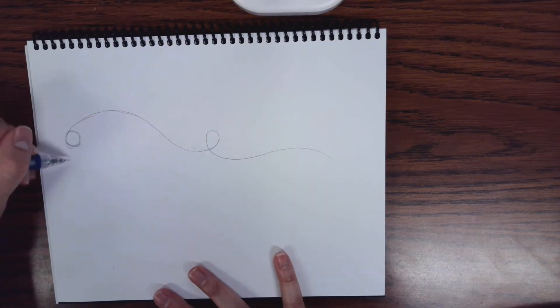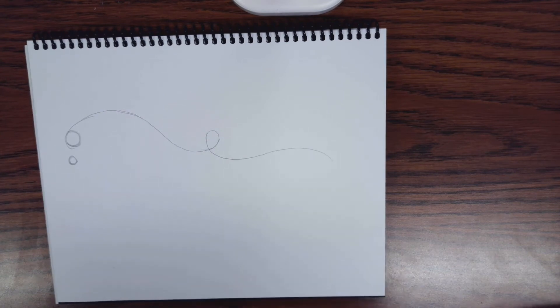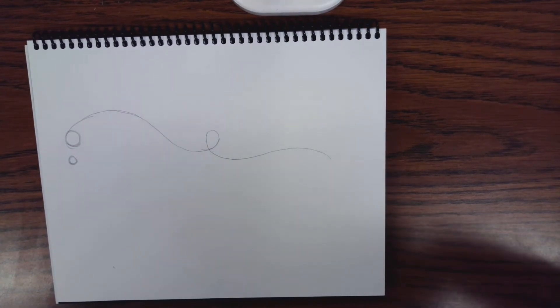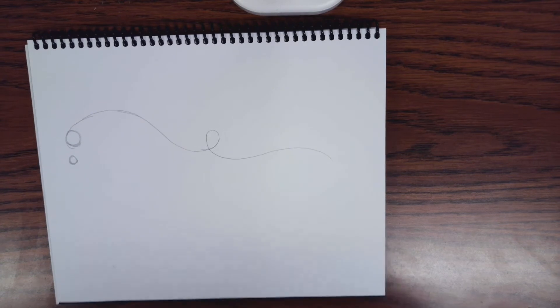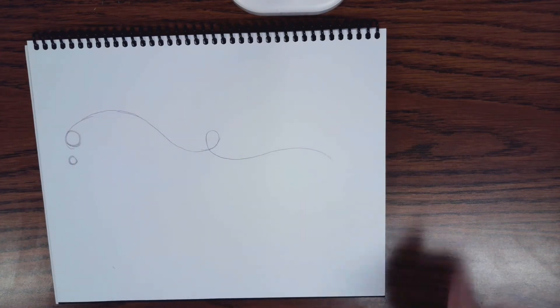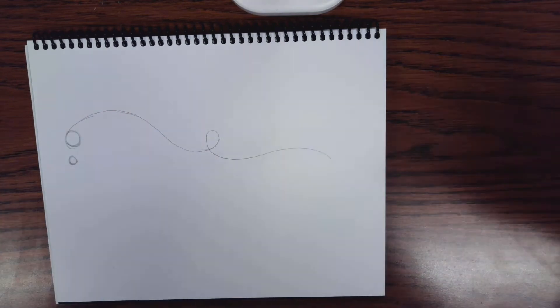From there, right next to it, you're going to do a little smaller circle. Does anyone want to guess what we're drawing yet? A whale tail? No, not a whale tail, but that's close. A butterfly? Nope. A horse? You guys are all so close. It is an animal, but we're going to move on, and we're going to do another step, and then I'll let you guess again.